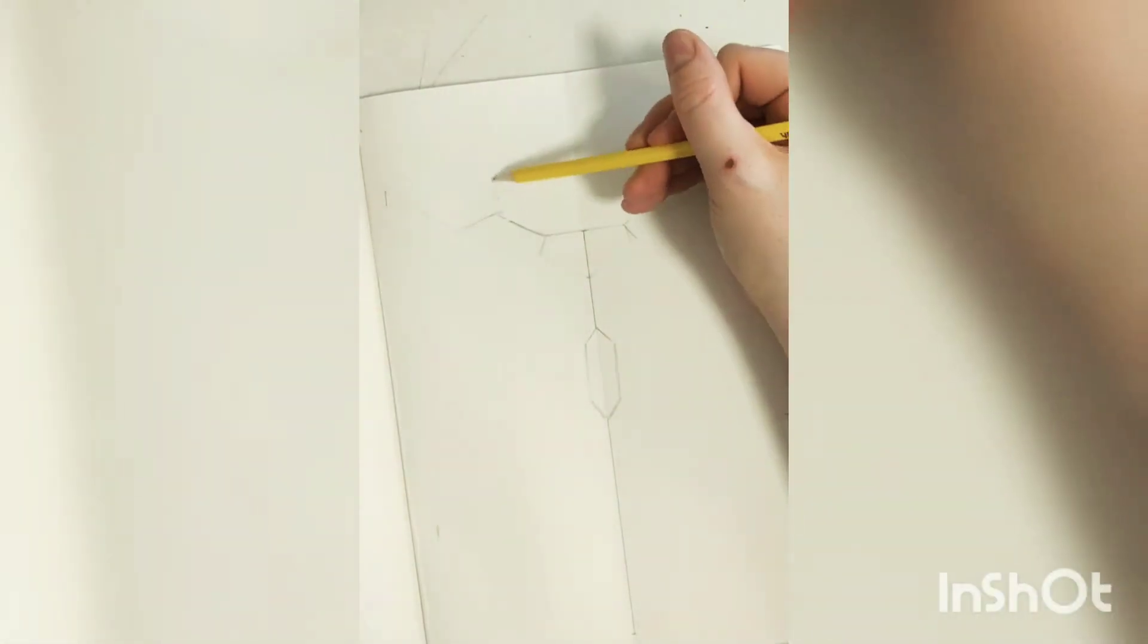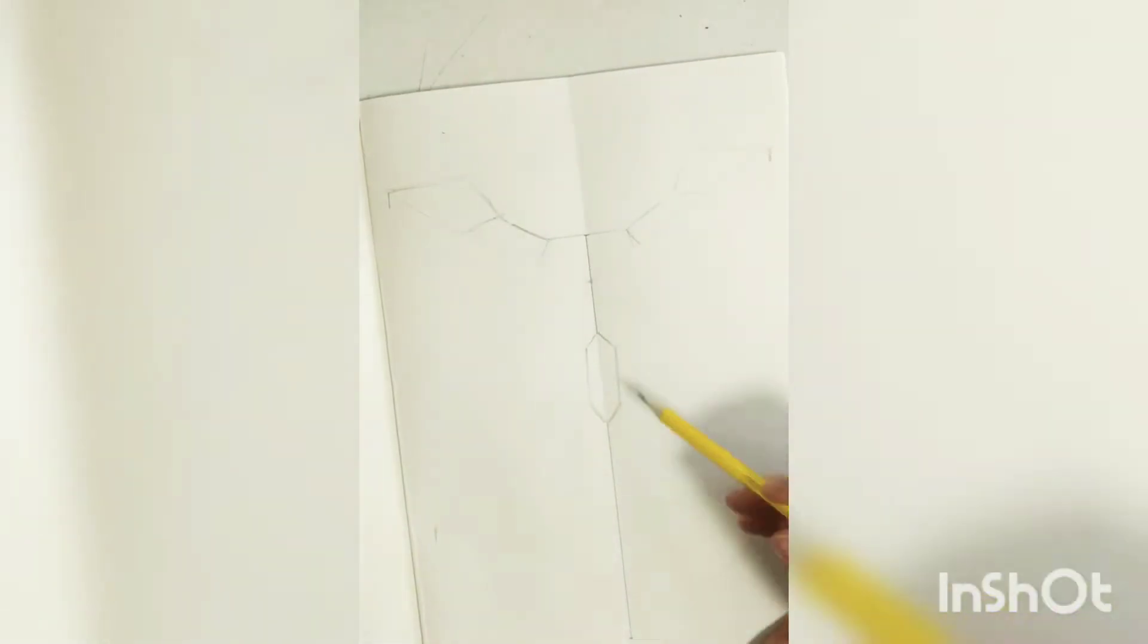So then I use my line in the middle as a bit of a guide to make sure I'm going symmetrical. So I'm using a rubber quite a lot with this because I get this sort of stuff wrong all the time.